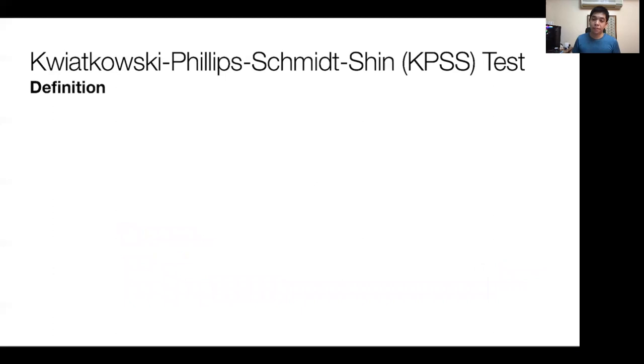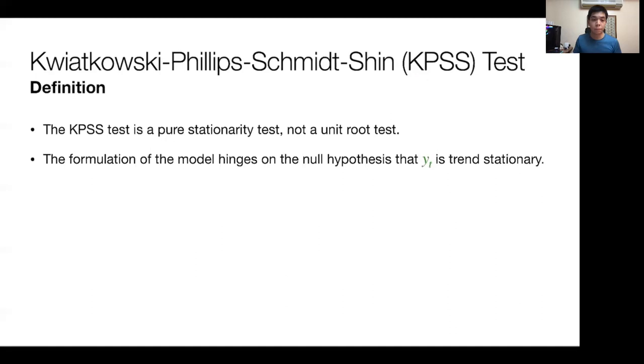The last test we're going to discuss is not a unit root test, it's simply a non-stationarity test. It's the Kwiatkowski-Phillips-Schmidt-Shin test, or more commonly known as the KPSS test. This solves one of the limitations of the ADF and DF, particularly in testing the stationarity or non-stationarity of a trend stationary process. The formulation of the model hinges on the null hypothesis that YT is trend stationary.